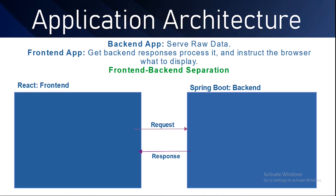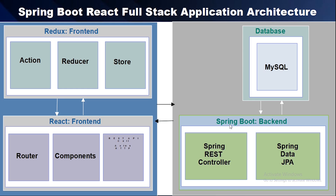In this video we will look at the application architecture. We have the backend app and the frontend app. The backend app has raw data, and the frontend app gets backend responses, processes it, and instructs the browser what to display. This is called frontend-backend separation — the frontend is a different app and the backend is a different app. We make a request and get the response from the backend.